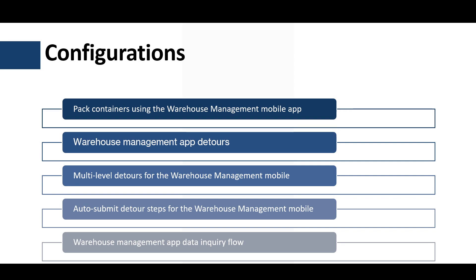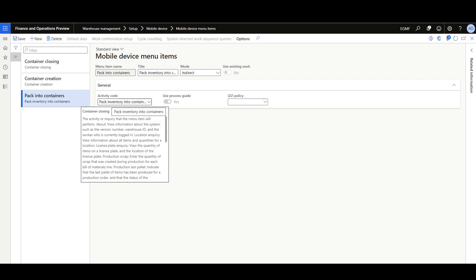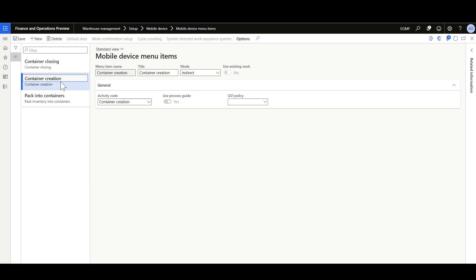Now let's review the configurations and features used in this demo. In addition to the main Pack Containers feature, I enabled Warehouse Management app detours, multi-level detours for the Warehouse Management mobile app, auto-submit detours steps for the Warehouse Management mobile, and the Warehouse Management app data inquiry flow. The main menu items are Pack Inventory into Container, Container Creation, and Container Closing.